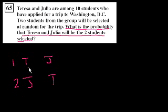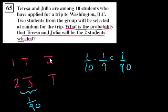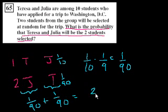If we figure out the probability of each and add them, we get the probability of either. The probability of Teresa first is 1 in 10; then once Teresa is picked, there are nine students left, so a 1 in 9 chance of picking Julia — that's 1 in 90. And the same logic gives 1 in 90 for Julia first then Teresa. Adding them together: 2 out of 90, which equals 1 out of 45. That's choice A.